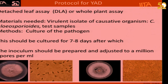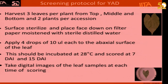From this picture, you can see that Colletotrichum is a very diverse organism. We need to harvest three leaves per plant from the top, the middle, and the bottom, and then two plants per session. We surface sterilize them and then place them face down on the filter.